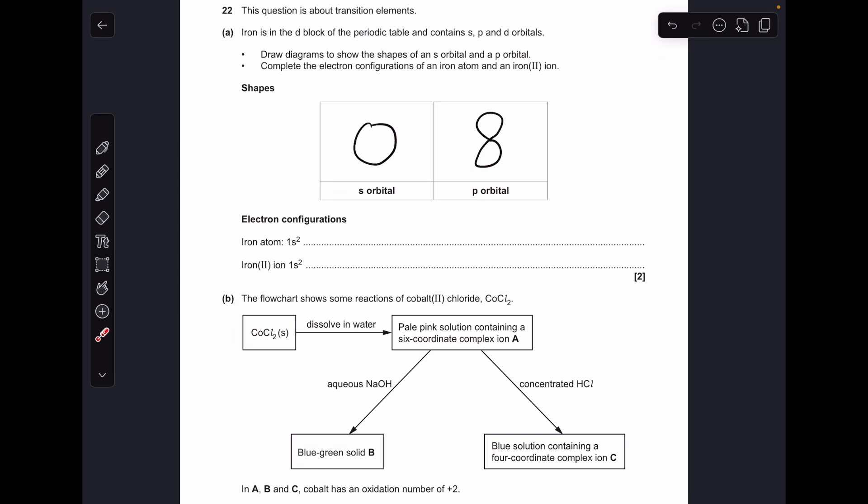Electron configurations now: an iron atom has 26 electrons, so there's the electron configuration for that. The 4s² and 3d⁶ can be the other way around if you want.